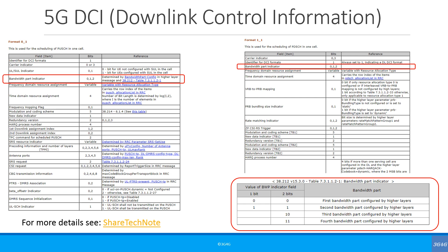A tech note explains the DCI control information very nicely. DCI Format 0-1 is used for uplink scheduling and DCI Format 1-1 is used for downlink scheduling. As you can see, they both have a bandwidth part indicator field which could take 0 bits, 1 bit, or 2 bits. Depending on whether it is 1 bit or 2 bits, they have different interpretations, as can be seen on the bottom right-hand side.